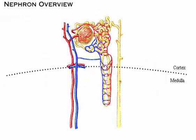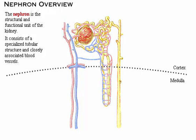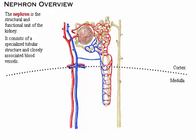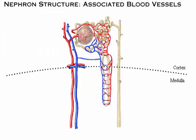Here you see a juxtamedullary nephron. The nephron is the structural and functional unit of the kidneys. It consists of a specialized tubular structure and closely associated blood vessels. Blood entering the kidney through the renal artery flows first into the segmental arteries and then into the lobar arteries.